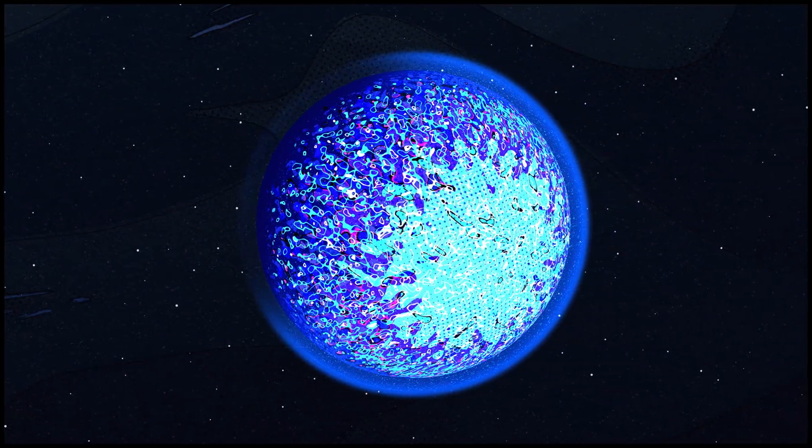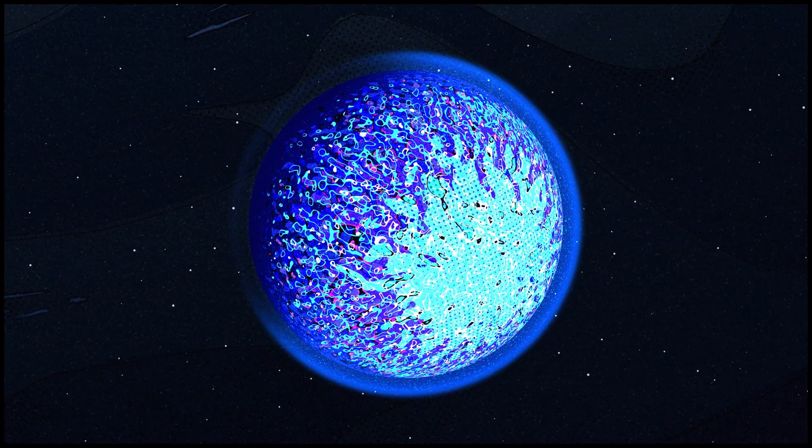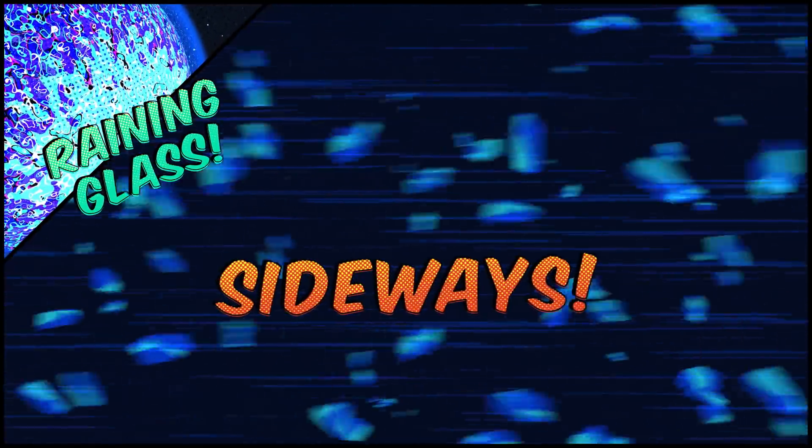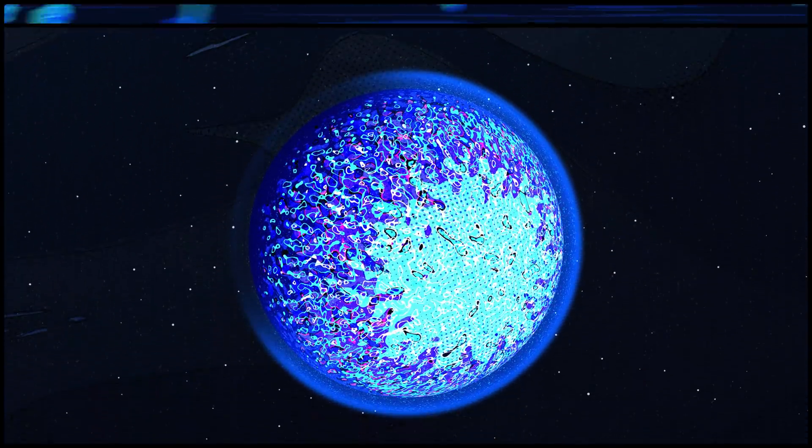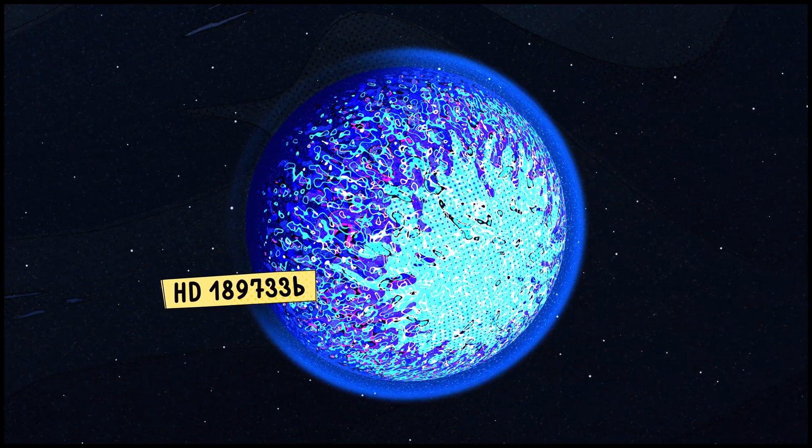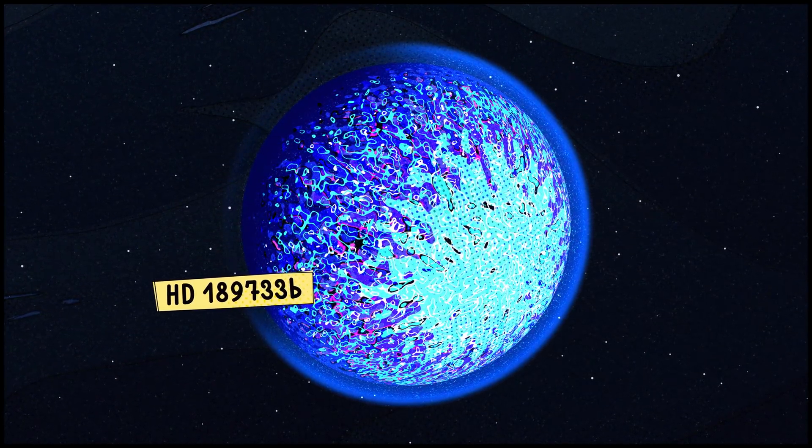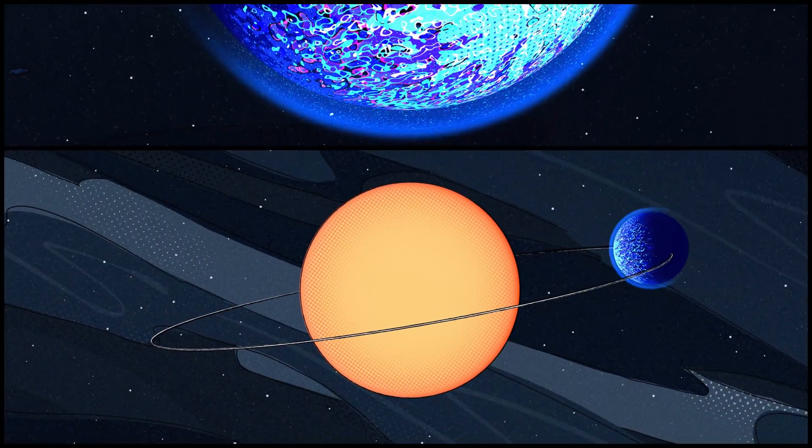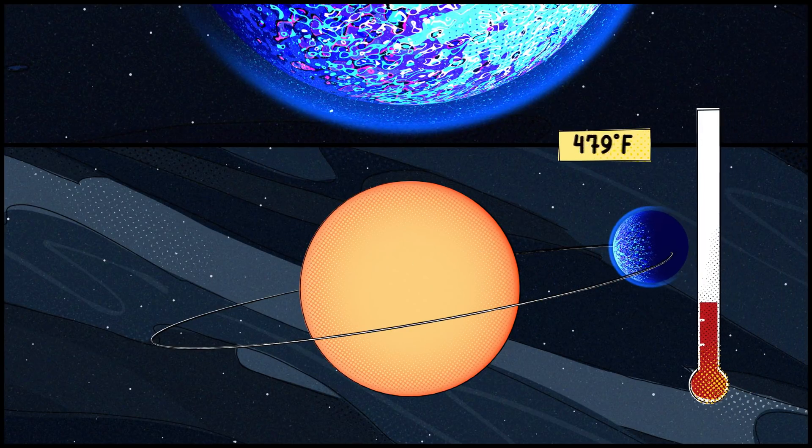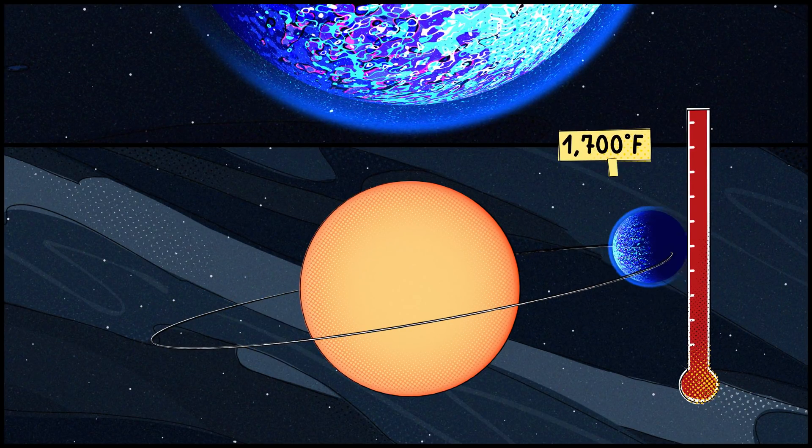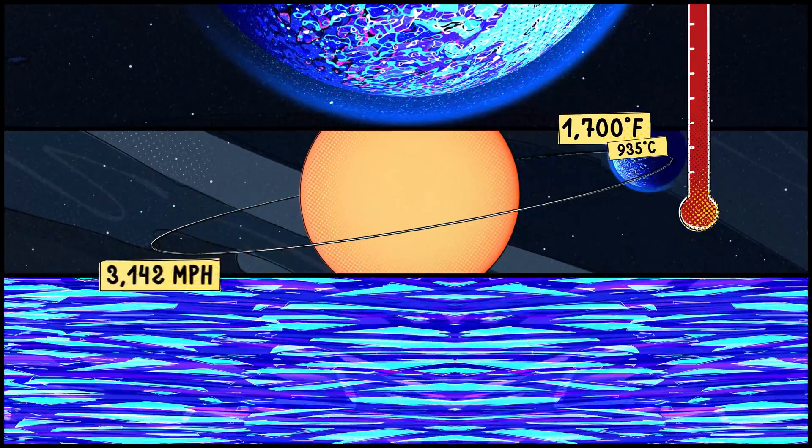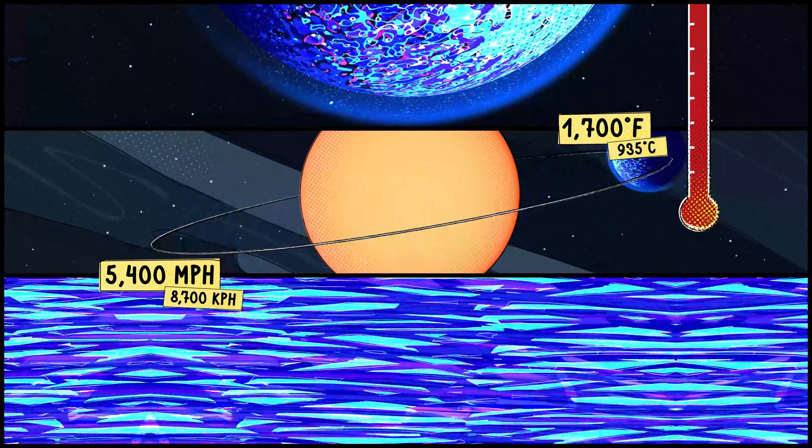High on the list of odd exoplanets to observe is a terrifying place where it might rain glass sideways. This exoplanet is called HD 189733 b, and it's a hot Jupiter, a giant gaseous world that hugs its star in such a tight orbit that its temperature is more than 1,700 degrees Fahrenheit. Its winds howl at more than 5,400 miles per hour.